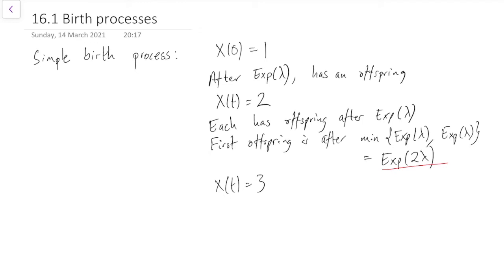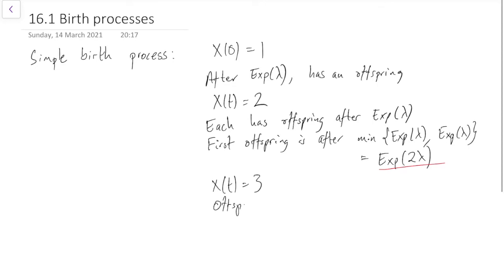Now the individual that already didn't have the offspring, by the memoryless property of the exponential distribution, they've still got an exponential lambda amount of time. The individual that did have the offspring is going to have another offspring after an exponential lambda of time. And this new third individual is going to have an offspring after an exponential lambda of time. So we get an offspring from the first of them after exponential 3 lambda. When there are n individuals we get an offspring in exponential n lambda amount of time.